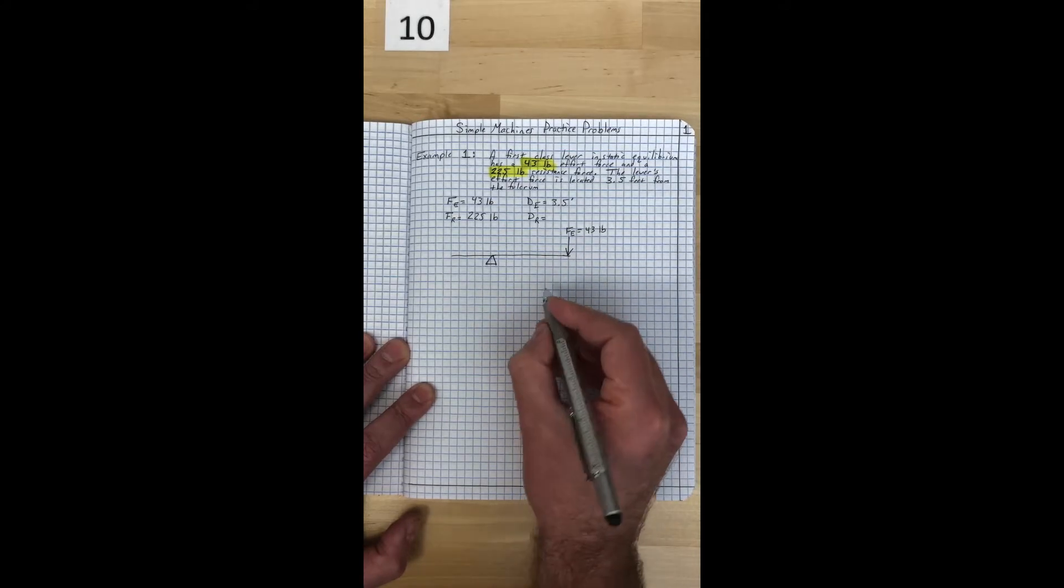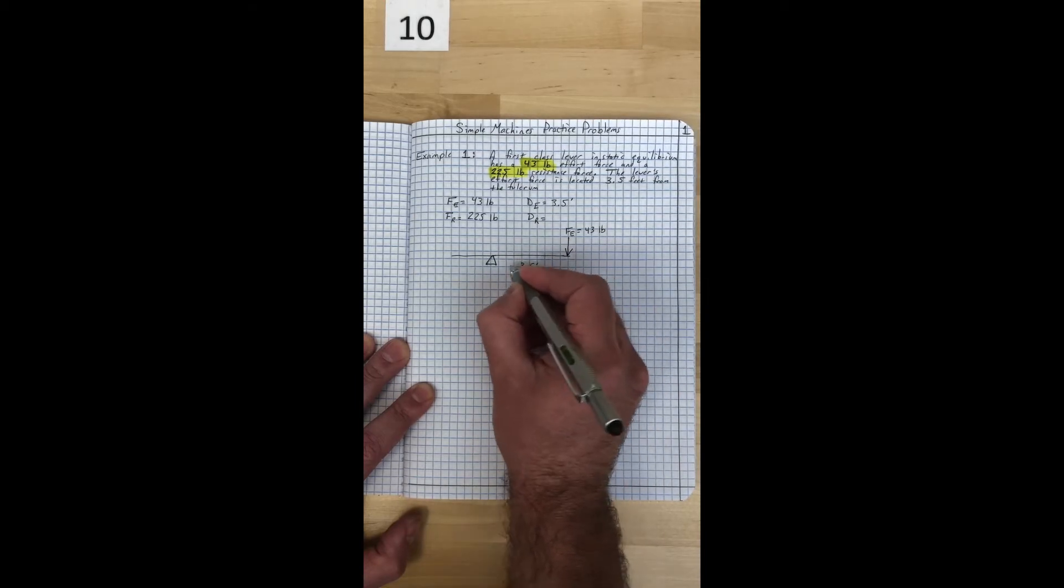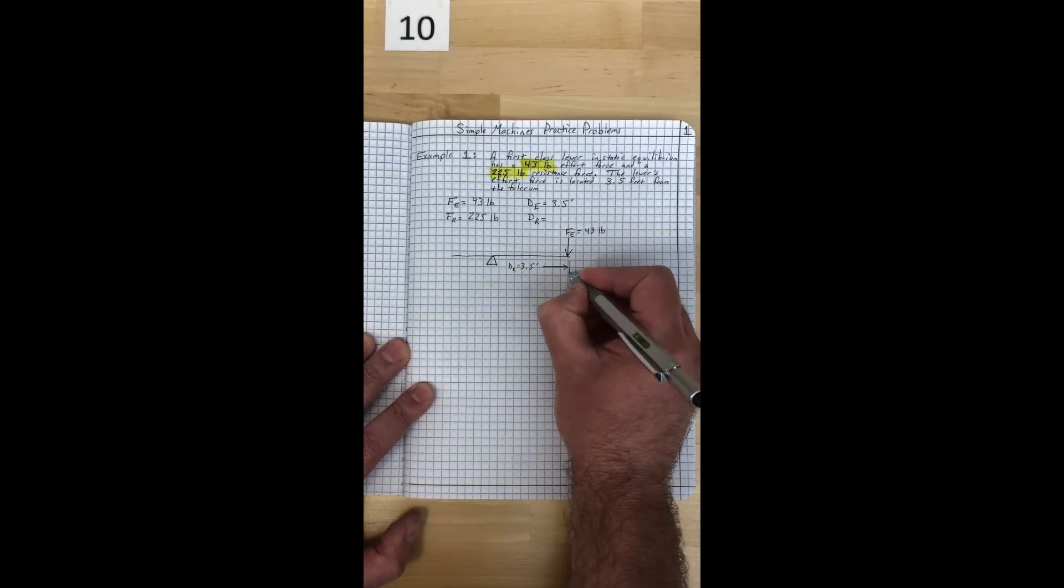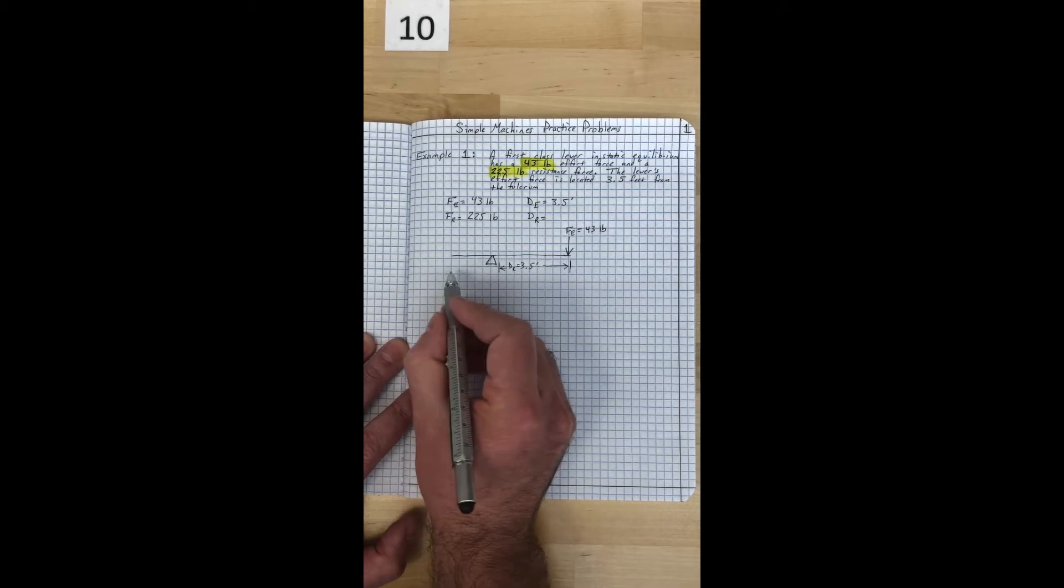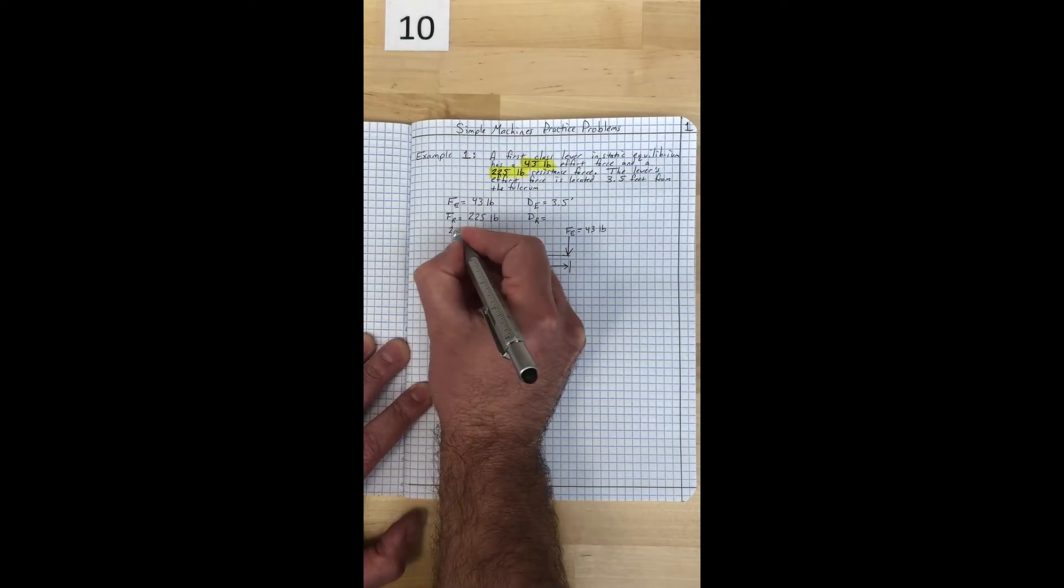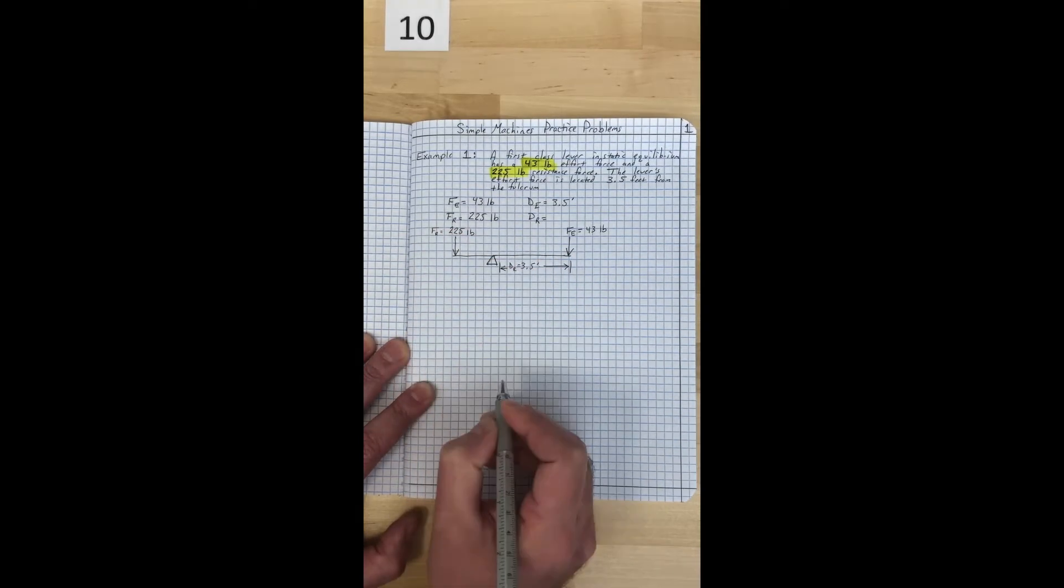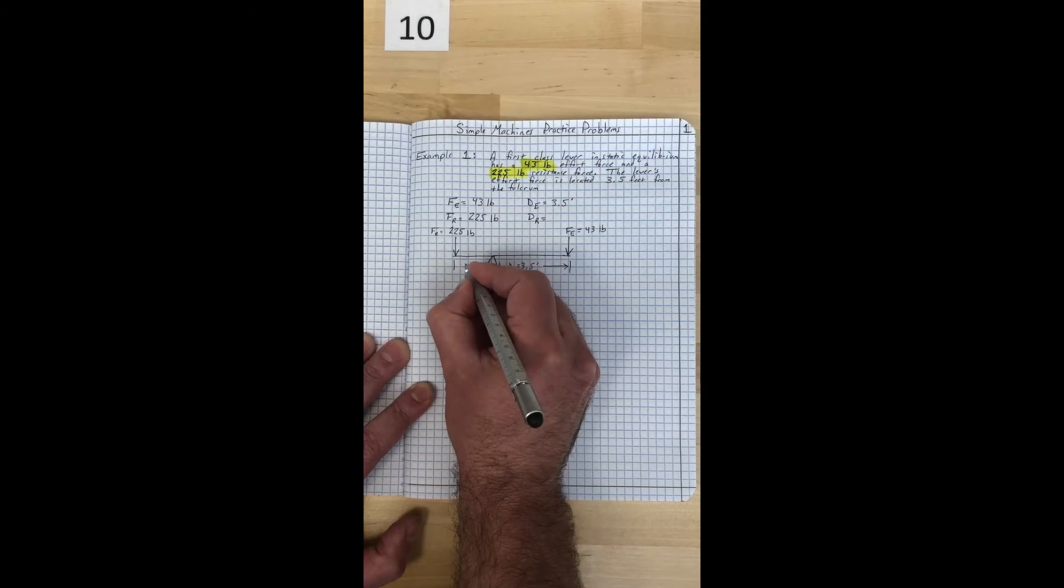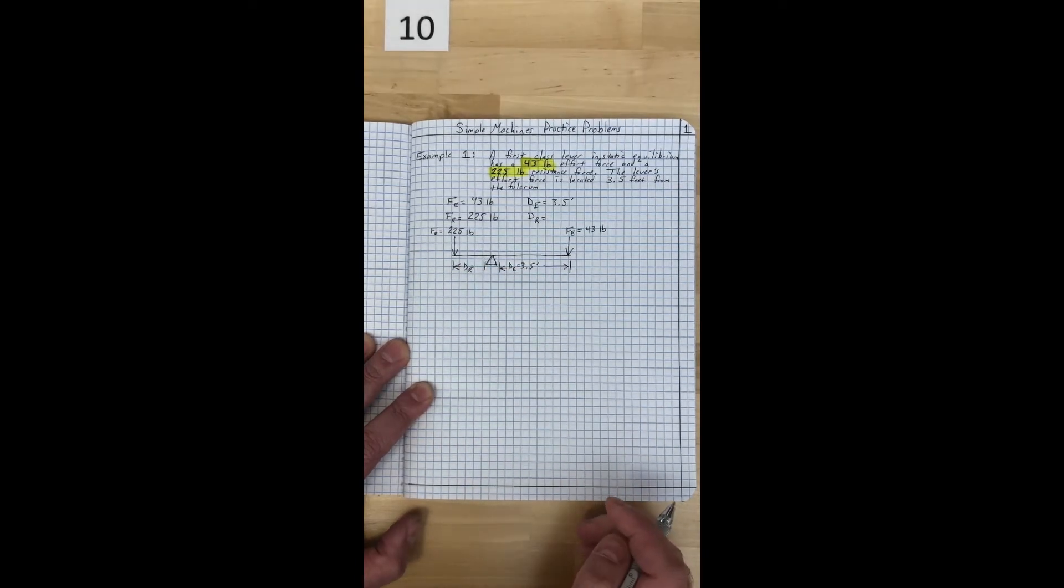I know that my effort force is three and a half feet away from the fulcrum, so I'm going to label that as the effort distance. Now over on this side, this is my resistance side, so I'm going to put a resistance force right here and I know that that resistance force is 225 pounds. I'll label that Fr. My resistance distance is right here and that is going to be Dr.